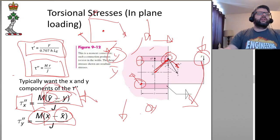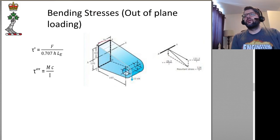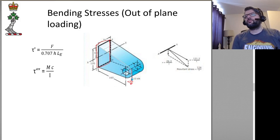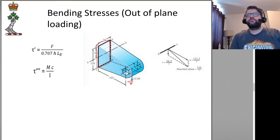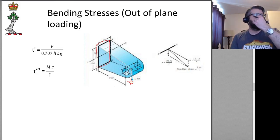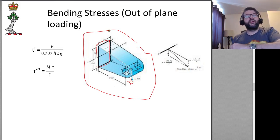The other one we have is bending stresses. These are going to be an out-of-plane loading situation — the weld is in a particular plane, and the force being applied is in a different plane. The component of the force that's causing the bending stress will be acting parallel to the plane of the weld.